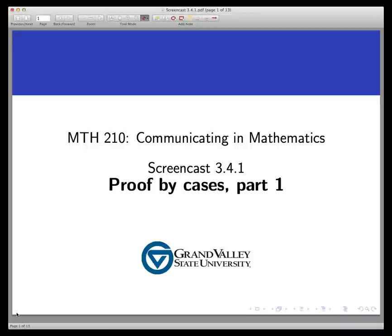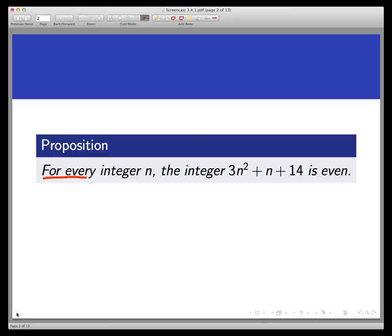We're going to prove the proposition: for all integers n, the integer 3n² + n + 14 is even.